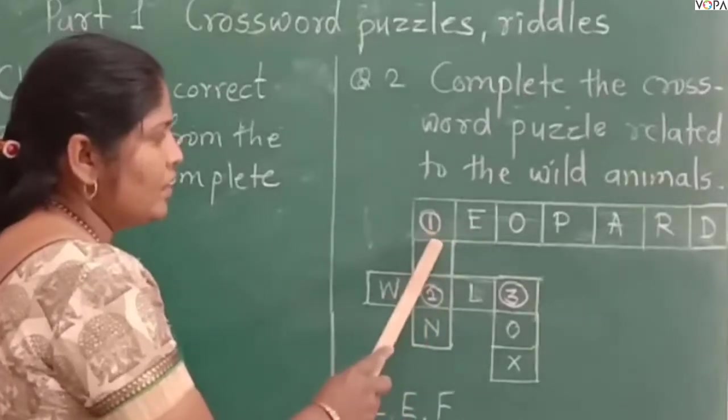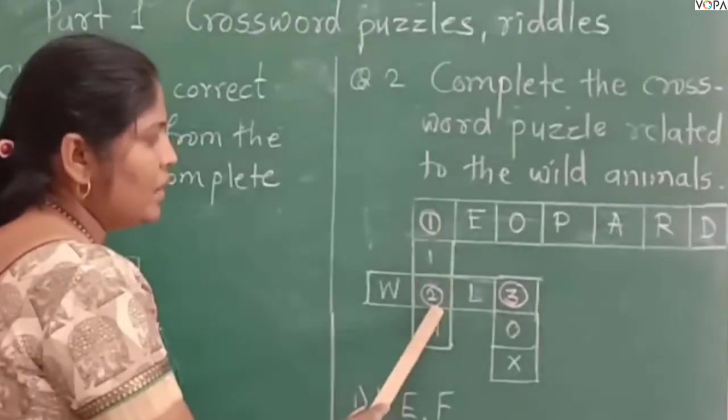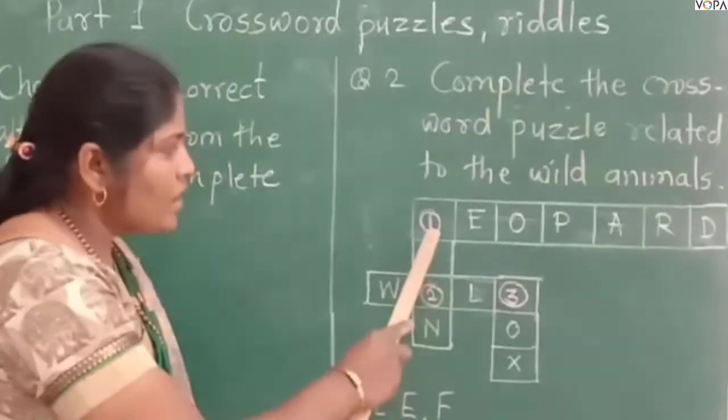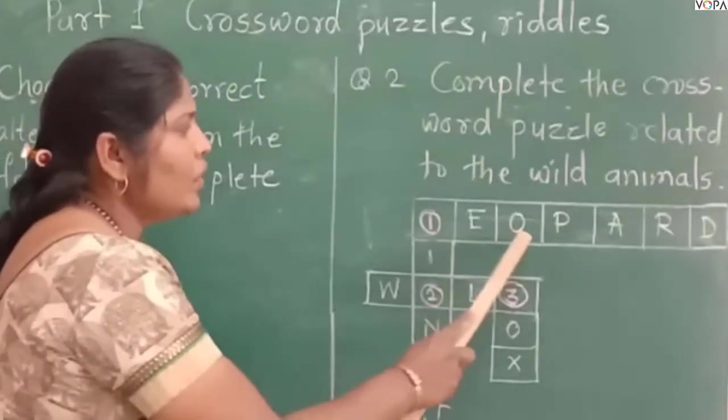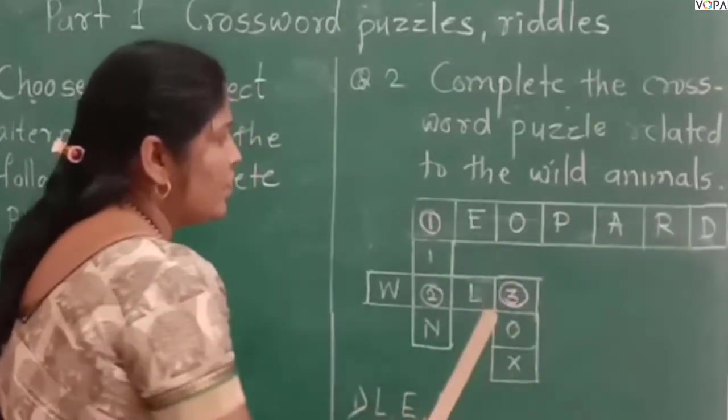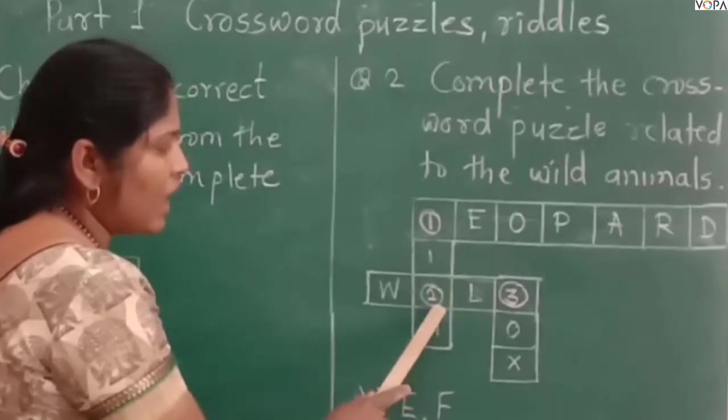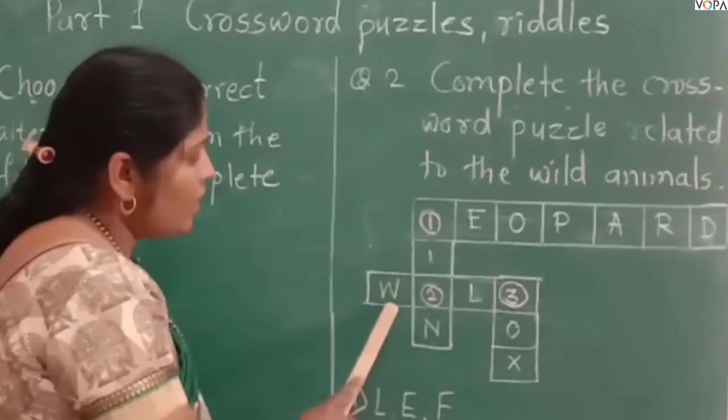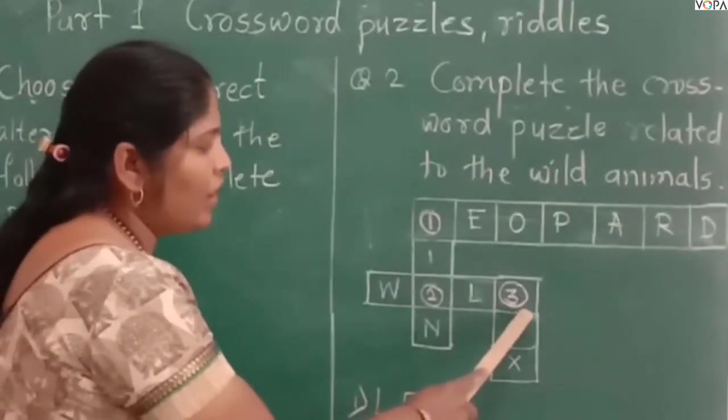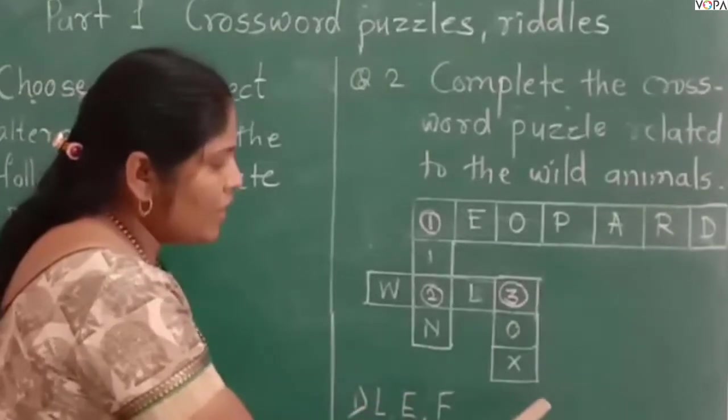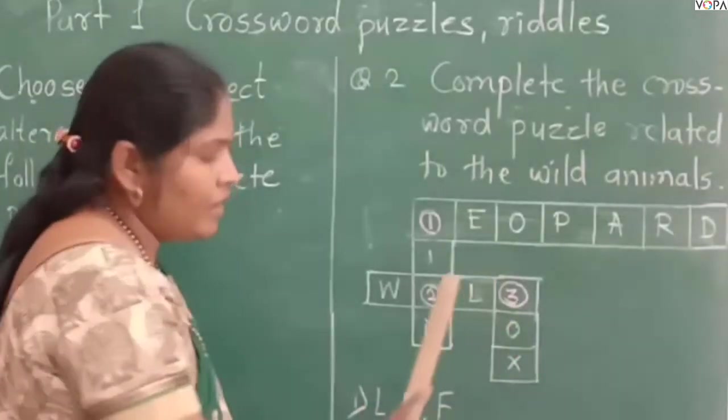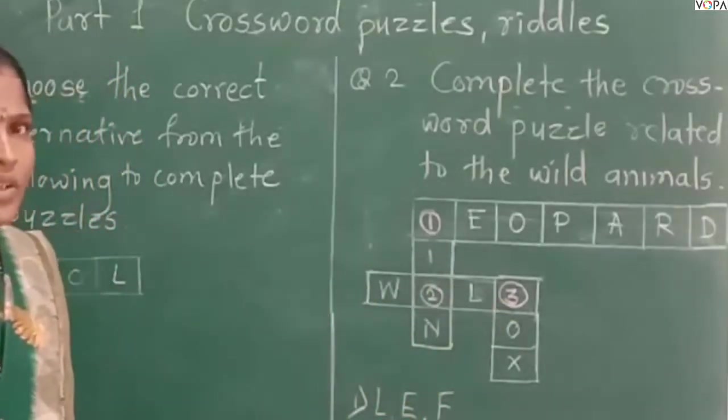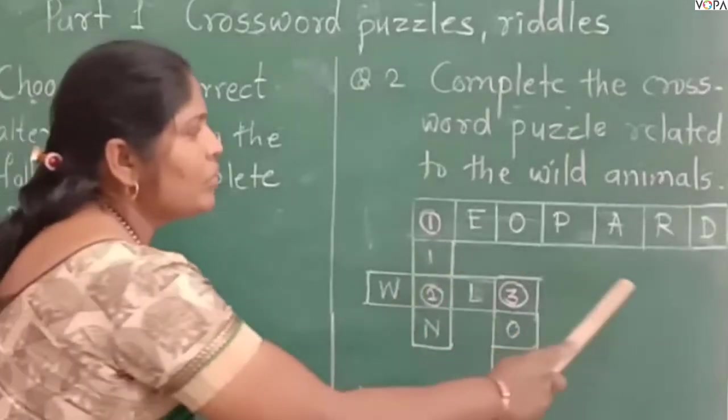In the horizontal boxes, we need to fill in wild animal names. Looking at positions one and two, we can spell L E O P A R D.